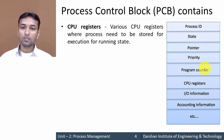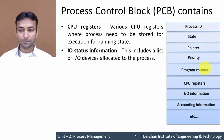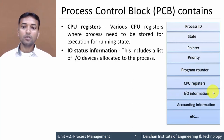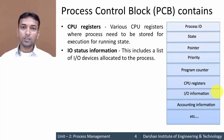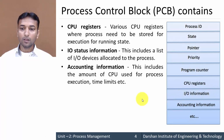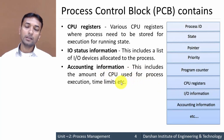The sixth field is CPU Registers, which stores the various CPU register values that the process needs for execution in the running state. The seventh field is I/O Status Information, which contains the list of I/O devices allocated to the current running process — for example, printer, memory, and processor. The eighth field is Accounting Information, which includes the amount of CPU used for process execution and the time limit.